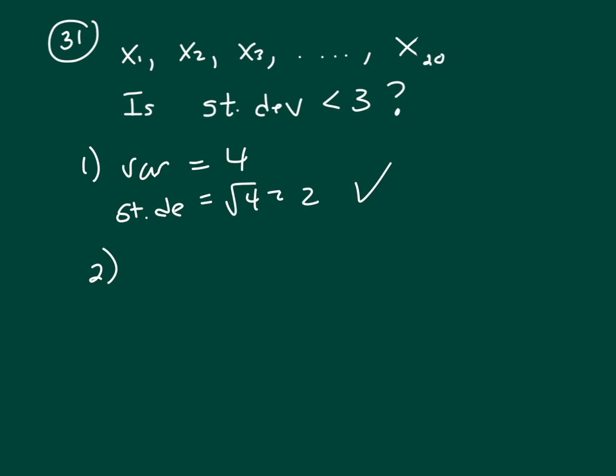So variance is the sum of a number minus the mean squared all over however many numbers you have. So we know we have 20 numbers because it says x of 1 up through x of 20, so I've got 20 numbers.